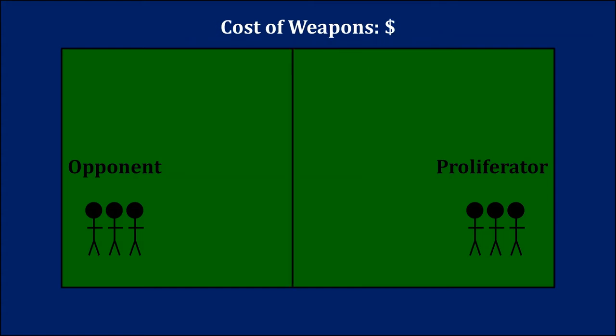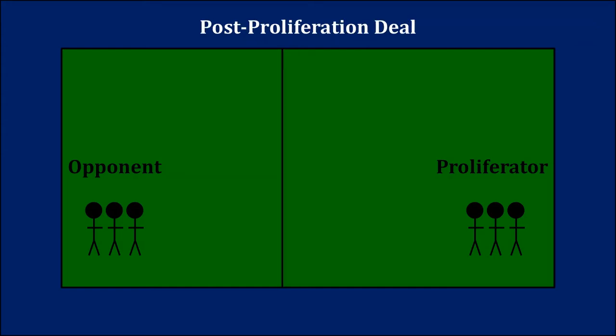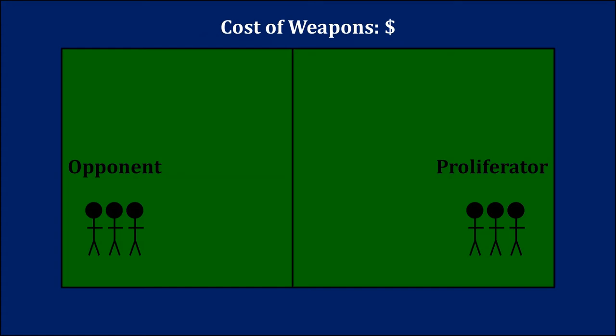Moving back a few steps, we can appreciate why a potential proliferator with very low costs of nuclear weapons is said to have a virtual nuclear deterrent. For the opponent to convince the potential proliferator not to build, it essentially needs to offer a deal that almost exactly matches what the proliferator would receive in a post-proliferation deal with a fully realized nuclear deterrent. The opponent can extract something, but it's a very minute amount because the potential proliferator's cost is so low. The proliferator doesn't actually have the nuclear weapons, but it's almost getting the full benefit simply because acquiring them is very easy.